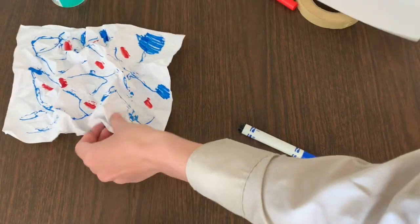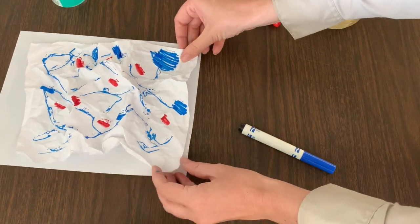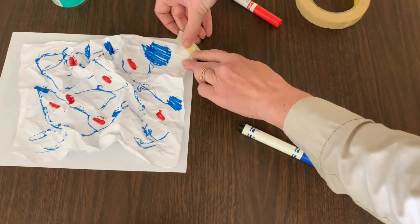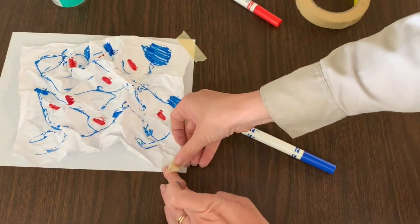Once we have finished marking all the different spots where pollution is coming from in our watershed, take your second piece of white paper and tape each corner of the land onto the other piece of paper and the table.